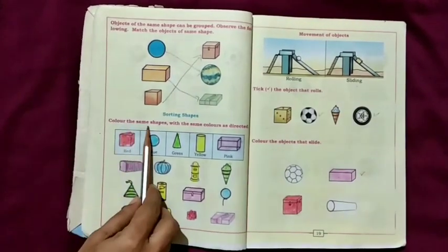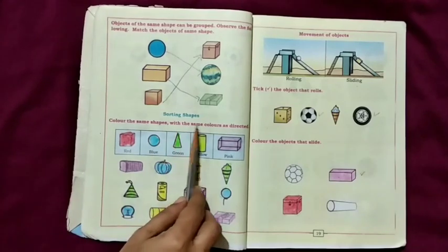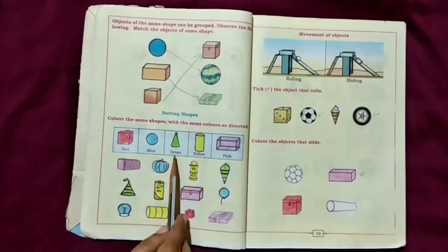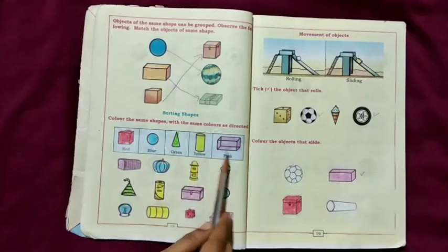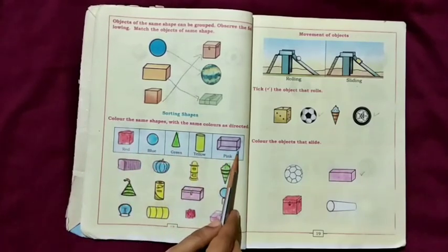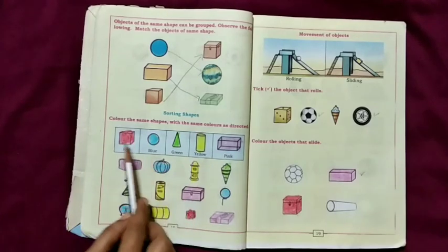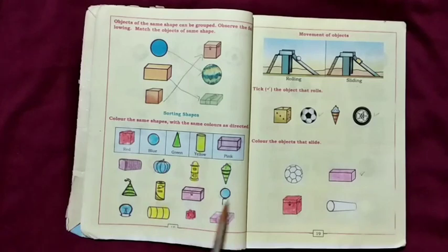Color the same shapes with the same colors as directed: red, blue, green, yellow, pink. These are the different shapes. Color the same color with the same shapes. This activity you do yourself.